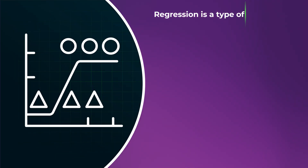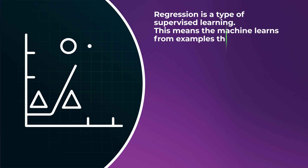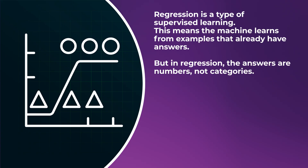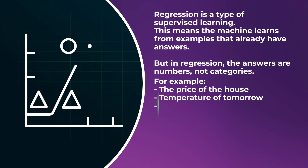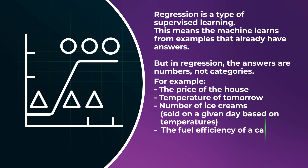In supervised machine learning, we have two categories: regression and classification. Regression is a type of supervised learning where the answers are numbers, not categories. For example, the price of a house, the temperature of tomorrow, the number of ice creams sold on a given day based on temperature, or the fuel efficiency of a car based on its engine size, weight, width, height, and length.